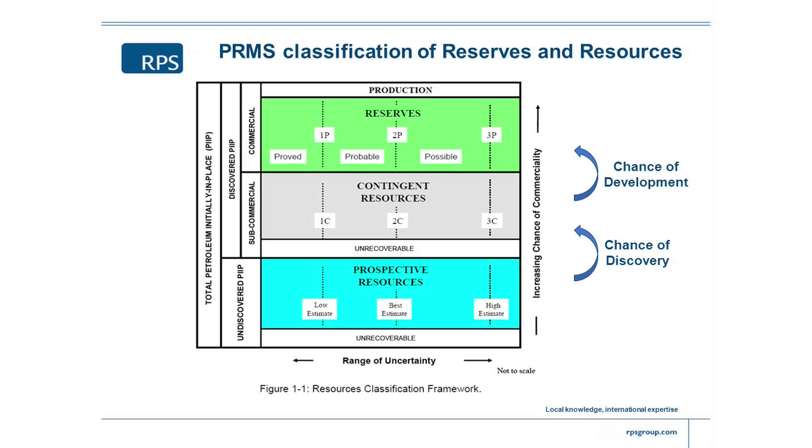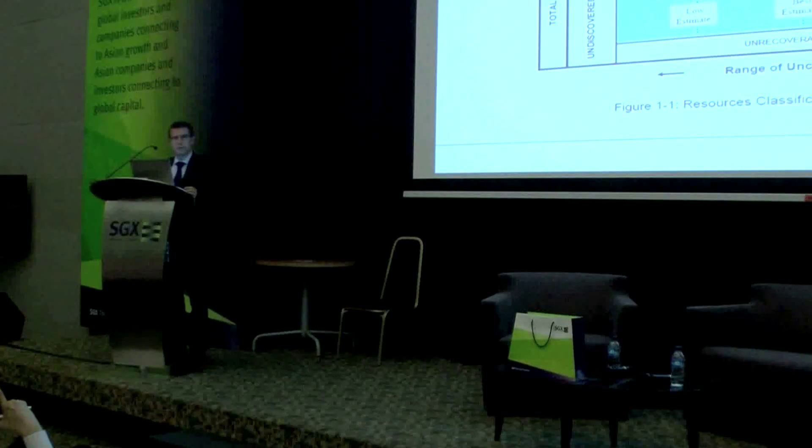Once volumes are in the grey area as contingent resources, there's still a risk to overcome — the chance of development. Not all discovered barrels end up as reserves; there are various reasons why some never make it. After discovery, what we typically do is appraise it — try to define in greater detail the volume of oil and gas discovered — and there are all the engineering studies needed for the development plan to bring that gas or oil to the surface.